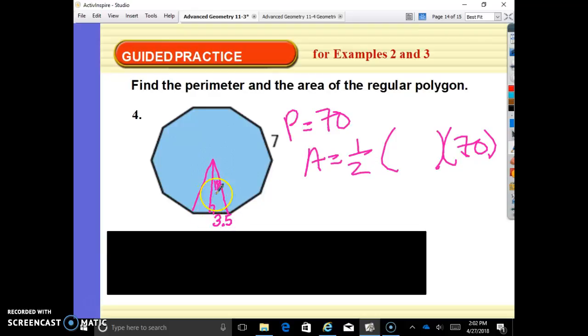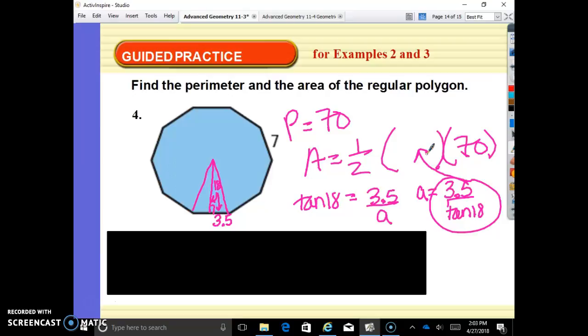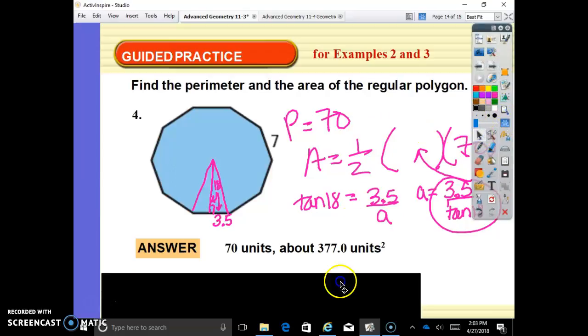We're looking for this apothem. So we have opposite, we need adjacent. Opposite and adjacent go with tan. Tan of 18 degrees equals opposite over adjacent, that apothem. So when you multiply by a on both sides and divide out tan 18 on both sides, you end up getting a equals 3.5 divided by tan 18. We're going to plug that in right here. So now I pick up my calculator: 3.5 divided by tan 18 equals, times 70 equals, divided by 2 equals. And we get that our area is approximately 377.02.